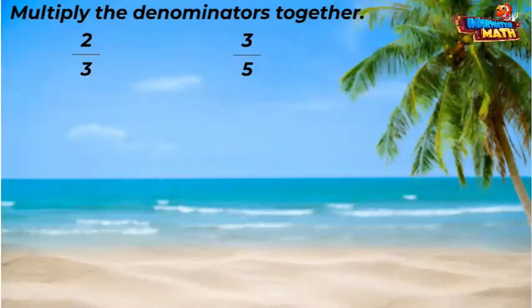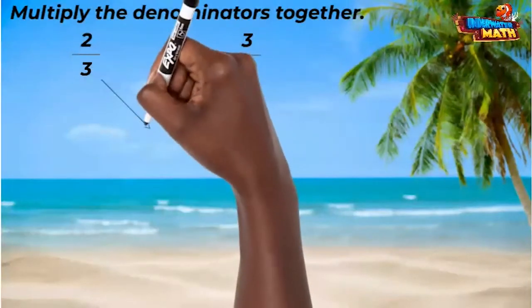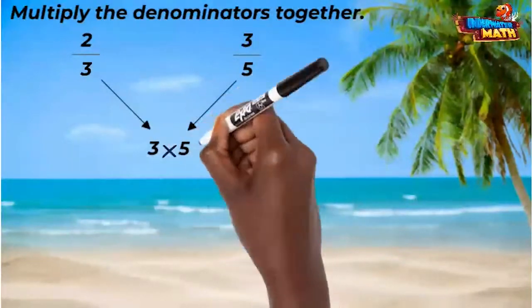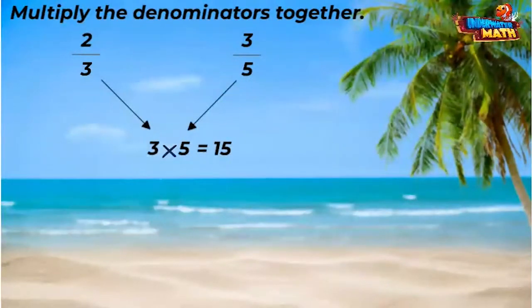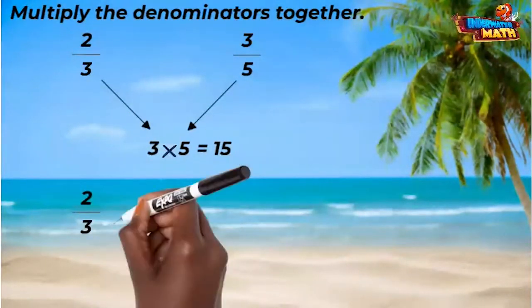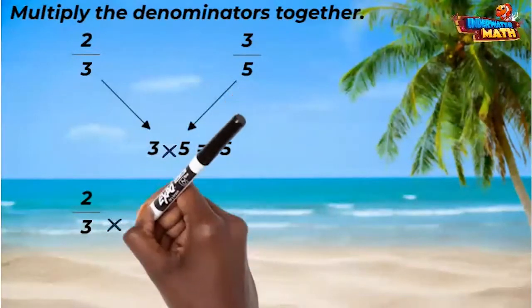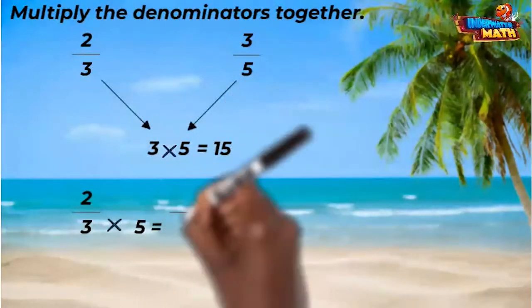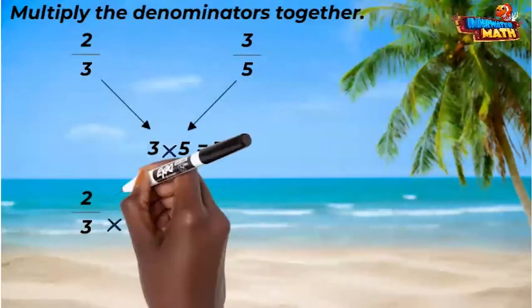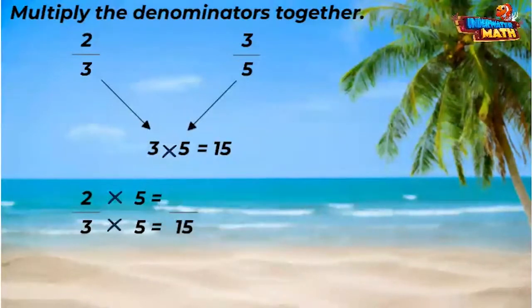Let's compare two-thirds and three-fifths. If we multiply these denominators — three and five — we get fifteen. Now find an equivalent fraction for each fraction we are comparing that has a denominator of fifteen. For two-thirds, we multiplied the denominator by five to get fifteen, so we have to multiply the numerator by five also. Two times five equals ten, so two-thirds is equivalent to ten-fifteenths.